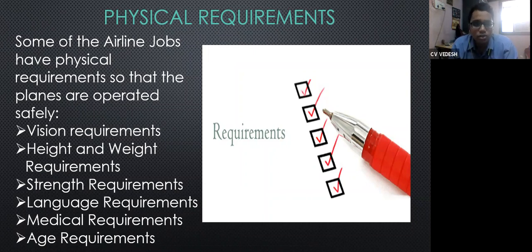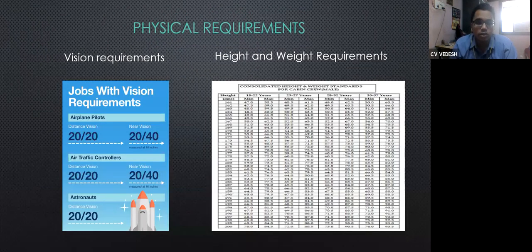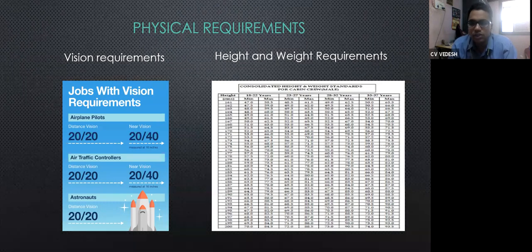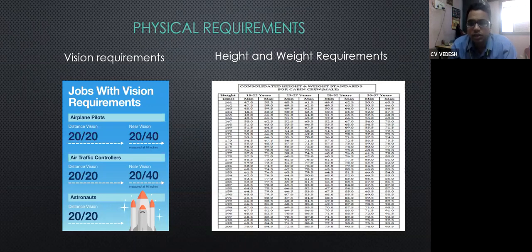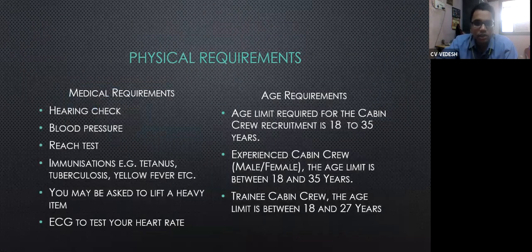Coming to the physical requirements for airline jobs: these include vision requirements, height and weight requirements, strength requirements, medical requirements, and age requirements. For vision, pilots must have 20/20 distance vision and near vision of 20/40. Air traffic controllers also require the same vision as pilots. Male and female crew members must maintain a maximum and minimum weight according to guidelines.